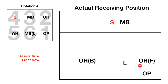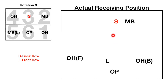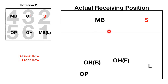In rotation four, it is quite obvious: the center and middle blocker remain in the front row, the outside hitter from the front row falls back to the back row, and the opposite spiker has to stand behind the outside hitter from the front row. Rotation three is similar to rotation four — the center and middle blocker remain in the front row, the outside hitter from the front row falls back to receive, and the opposite spiker hides behind the libero to avoid receiving.